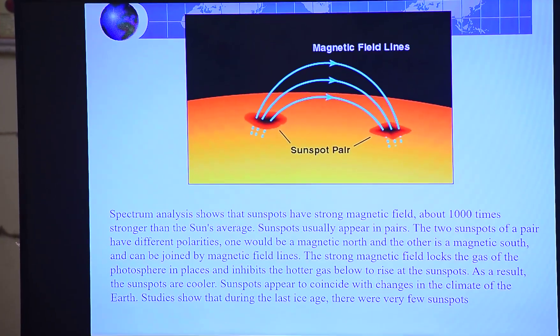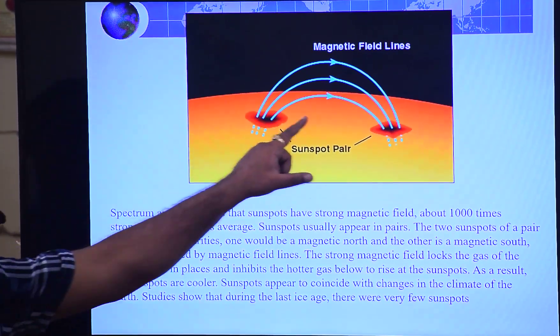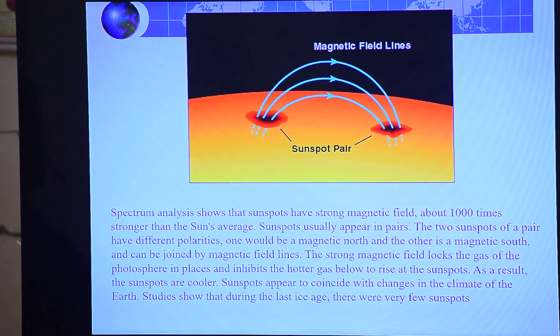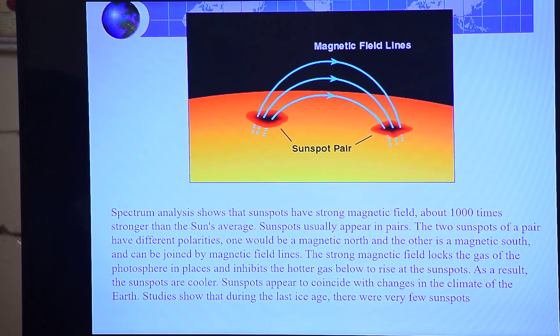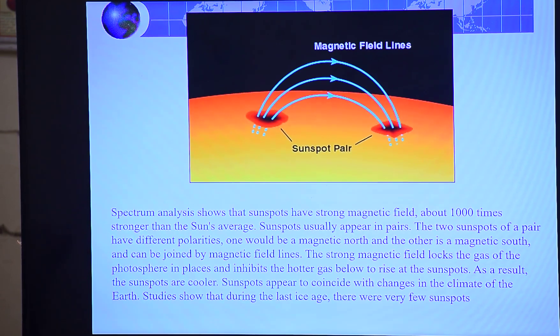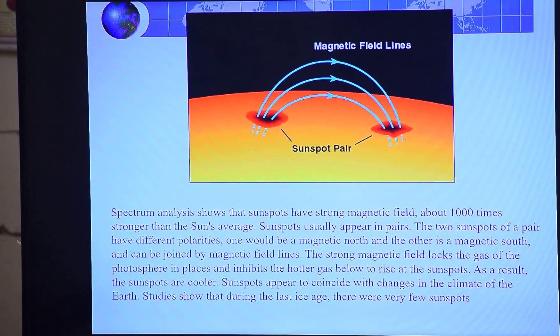And wahan per kya bandate hai - they become two poles, magnetic poles. They become two, one is positive North and South. And from these two sunspots, remember that these two sunspots become - I said that magnetic poles. And you know that from the North to South, North to South, what happens? Magnetic lines of force.